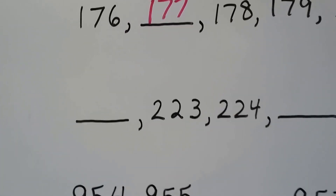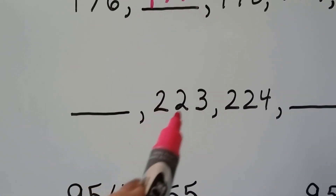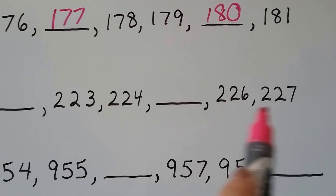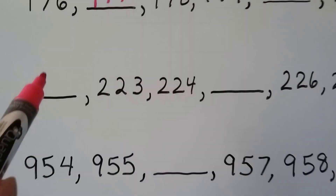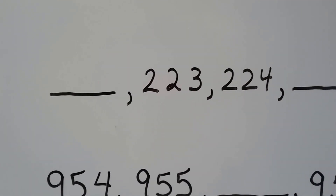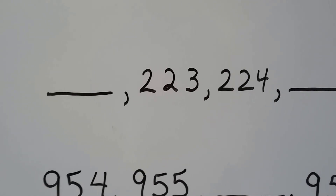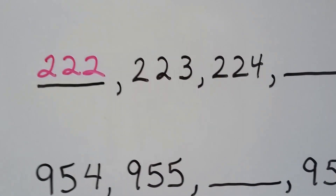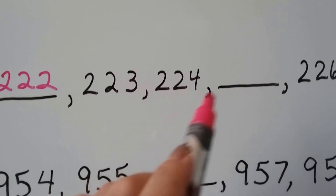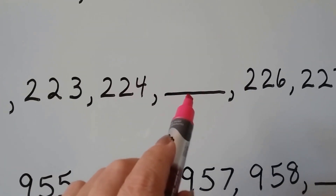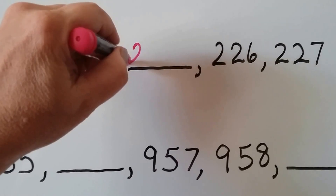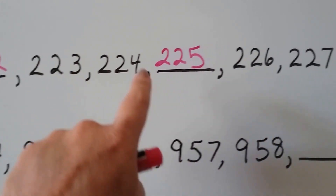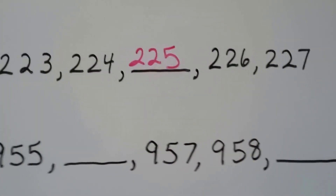Let's see if we can do this one. We need to know what comes before 223. Then we've got 224 and a missing number, 226, 227. What number comes before 223? It'd be one less — 222. Now we've got 223, 224. If you said 225, you're right. We can see that the ones place is going up by 1, 2, 3, 4, 5, 6, 7 in the ones place.